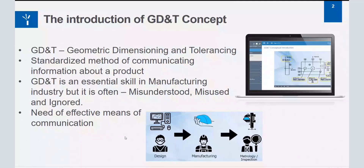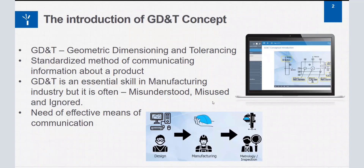There is a need for the designer to communicate their design intent well to the manufacturing and inspection teams. But often in the industry, GD&T — even though it's an essential skill — is misunderstood, misused, or ignored. This happens because people from these three departments may not have a complete understanding of the concept, which is why courses teaching GD&T come into play. There is a definite need for effective communication between designers, manufacturers, and inspectors.